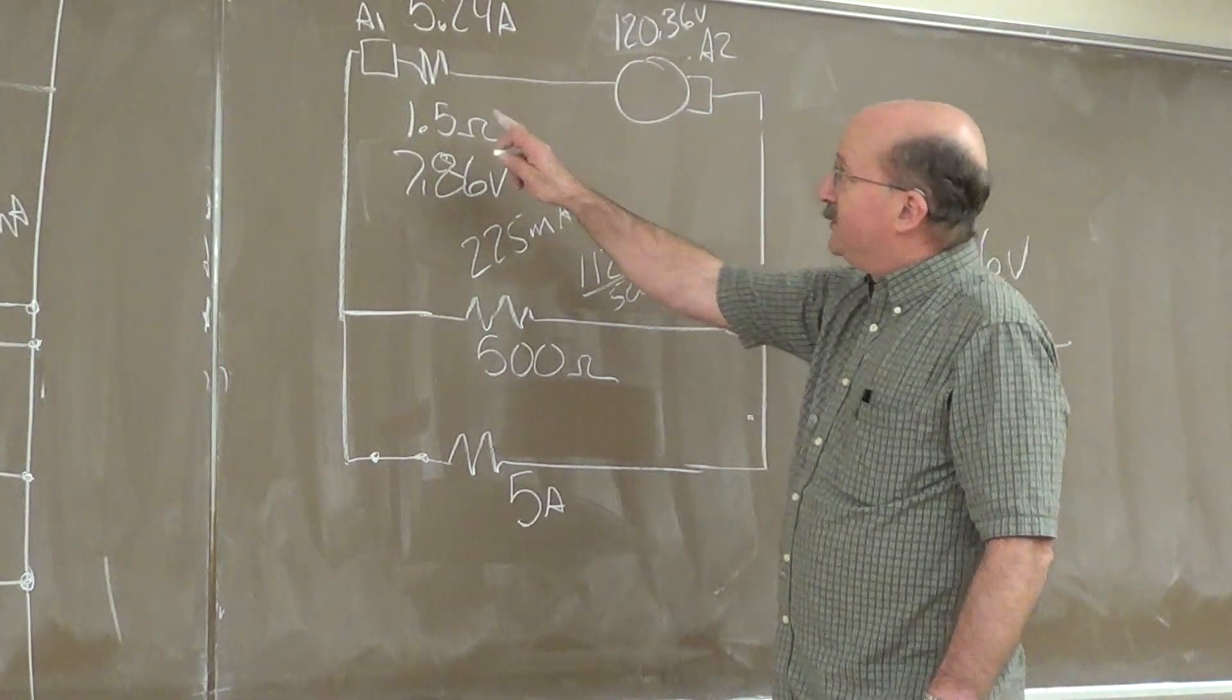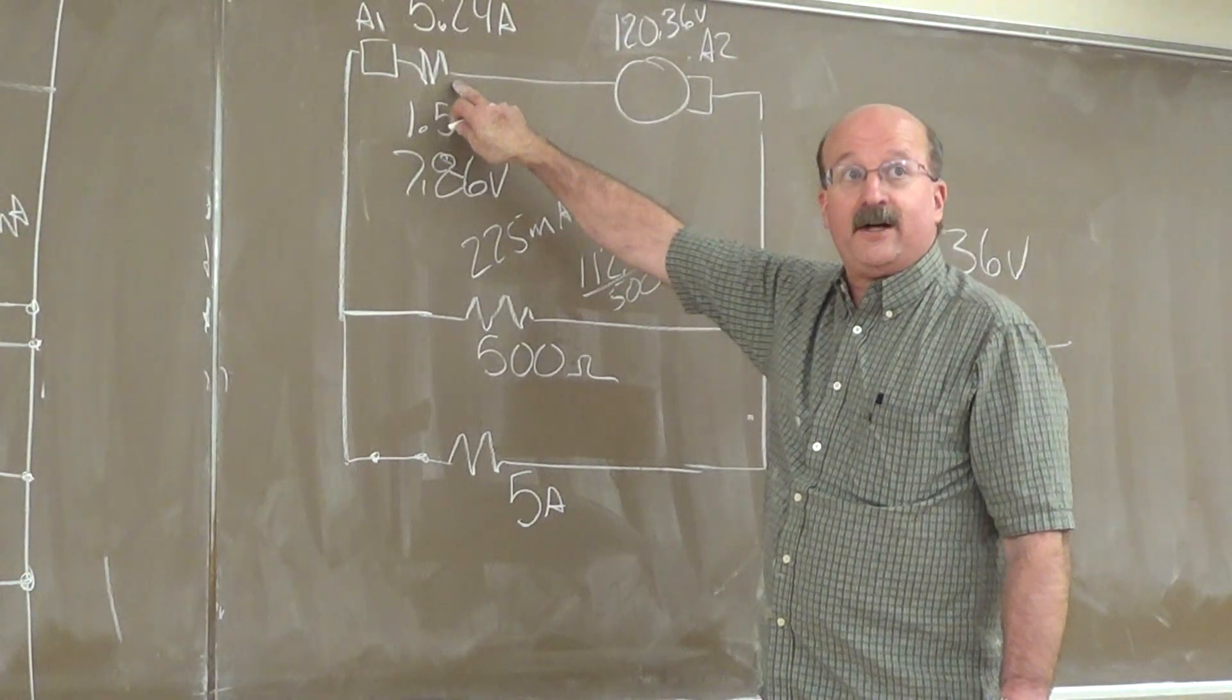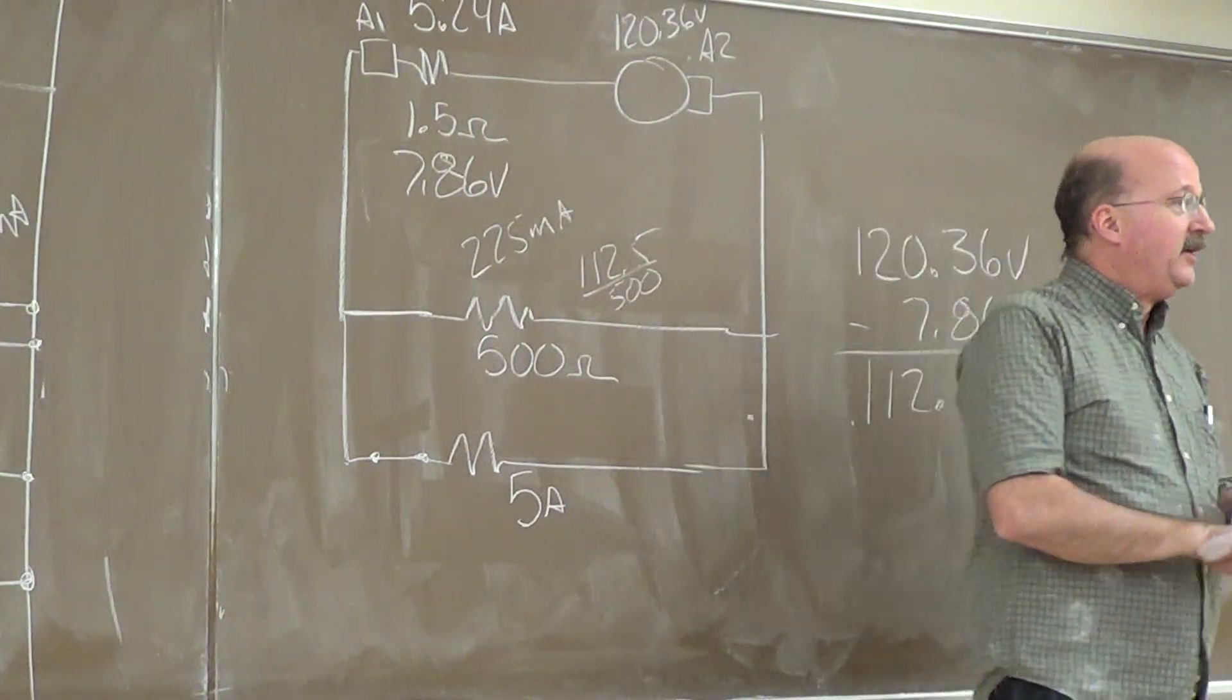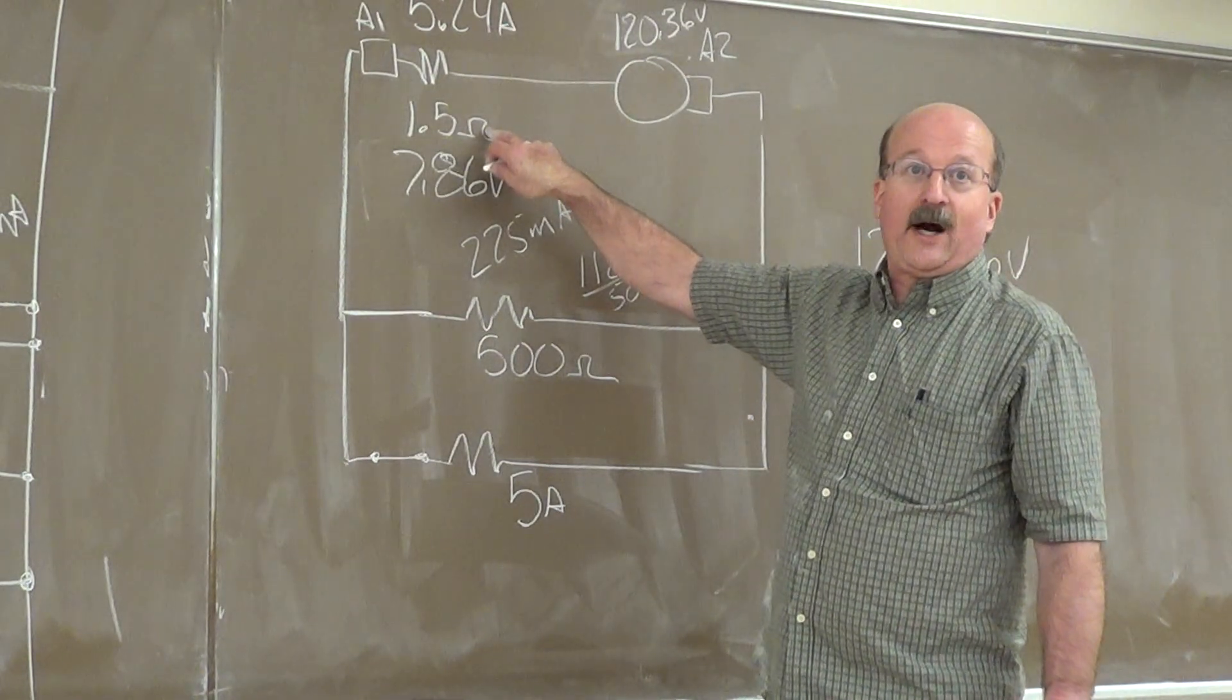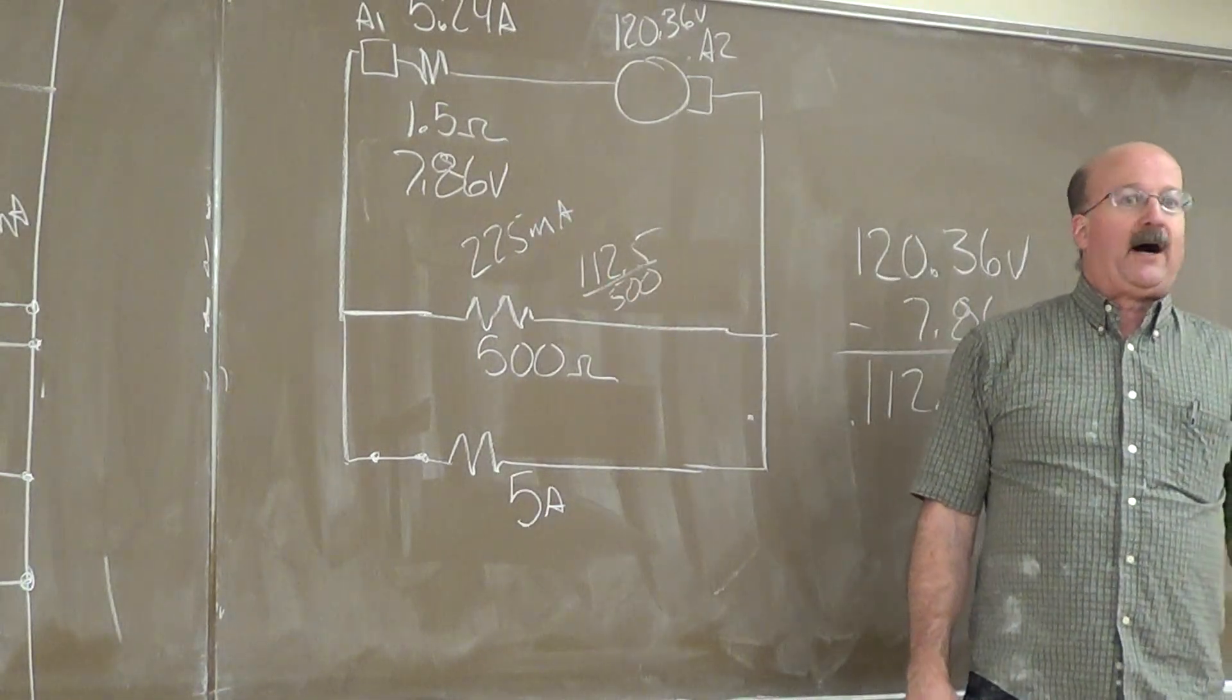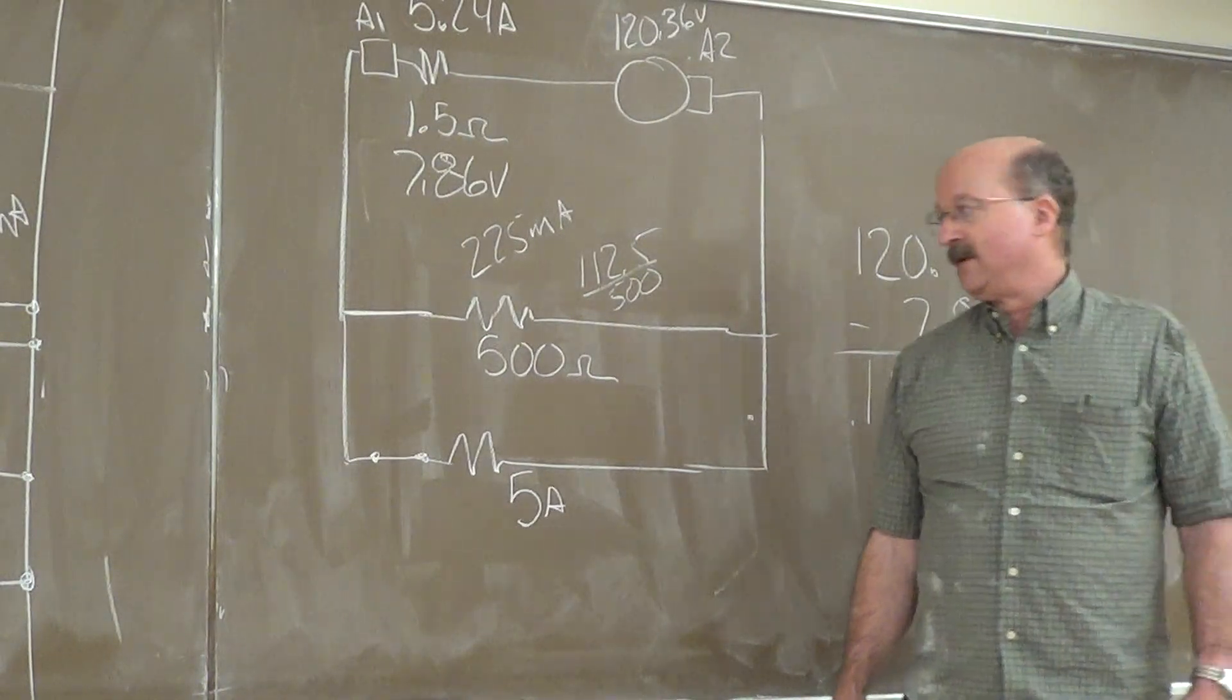But when you look at this, you do your calculations here. We know we're going to have an internal voltage drop here. You can calculate that voltage drop and calculate your power loss inside your generator. This power loss that we have here is why we will never get out the same amount of power that we put into a generator.